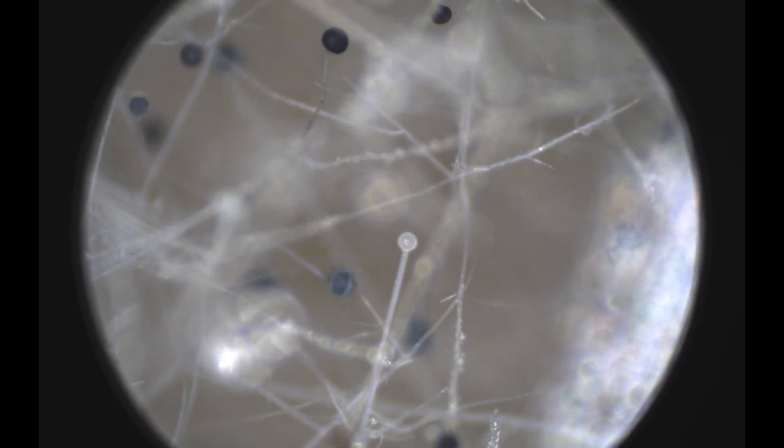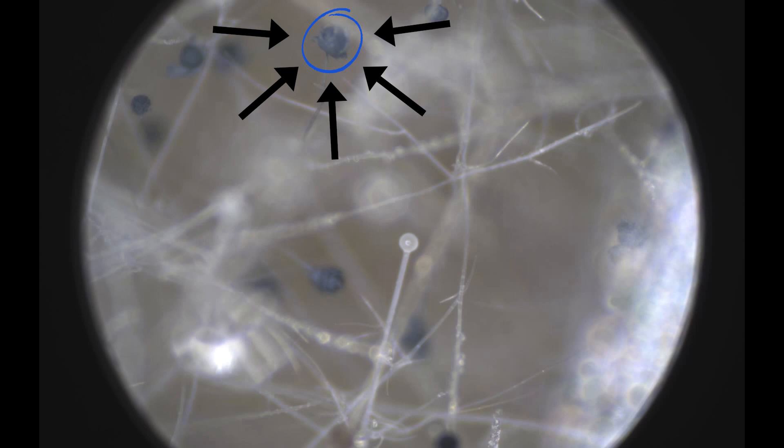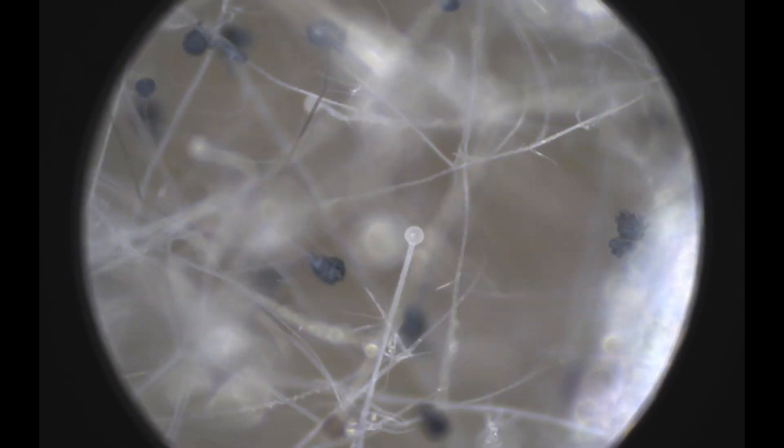After the sporangiospores mature, the sporangia break open, releasing the mature spores. When the conditions are suitable, the spores can grow into a new colony and repeat the cycle all over again.